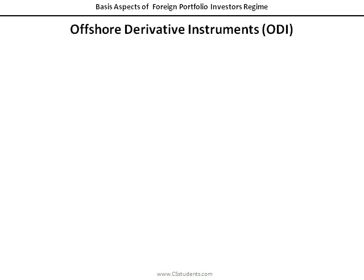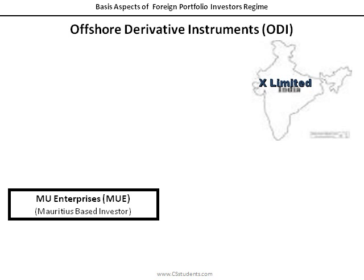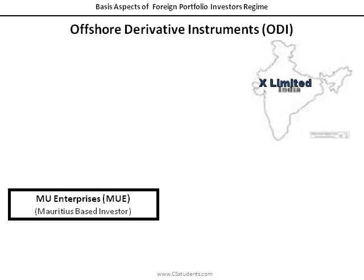Let's start with the concept first with an example. MU Enterprises is an entity based at Mauritius and wanted to make investment in the equity shares of an Indian listed company, CX Limited. The simple route is MU Enterprises first registers as FPI with an India-based designated depository participant and starts making investments. But just to invest in one company, MU Enterprises may not go for registration. So what is the solution?